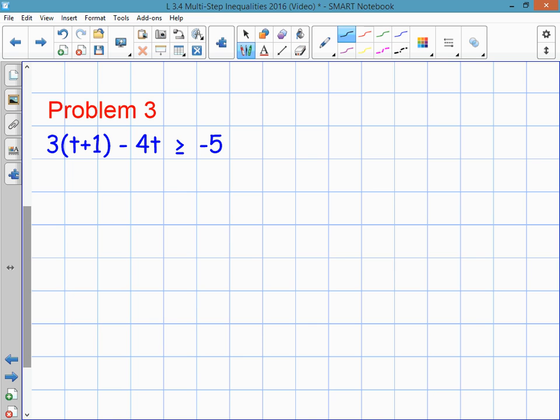So here's problem 3. It involves multiple steps. The first step is to take the number outside the parentheses and distribute it to get 3t plus 3 minus the 4t greater than or equal to negative 5. And now you're going to add like terms. 3t and minus 4t makes negative 1t plus the 3 greater than or equal to negative 5.